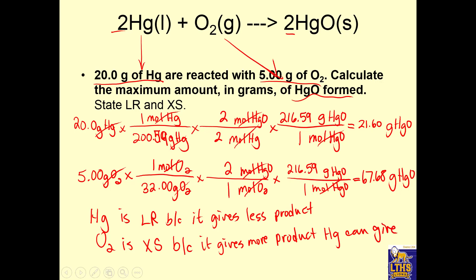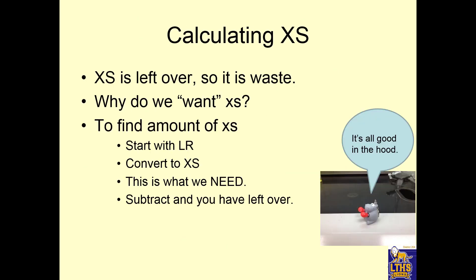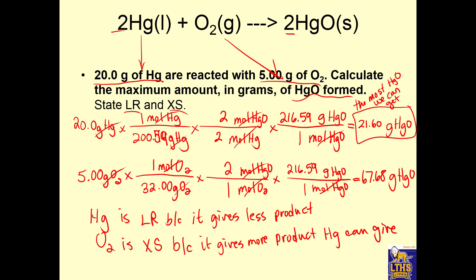So we answered the first part — state the limiting and excess reactant. Now we have to figure out the maximum amount of HgO formed. The most HgO we can get is 21.60 grams, because once the mercury runs out, you're not getting any more HgO — just like once the wheels are gone, you can't get any more tricycles. That's how you calculate the most product you can get out and how you decide what the limiting and excess reactants are.